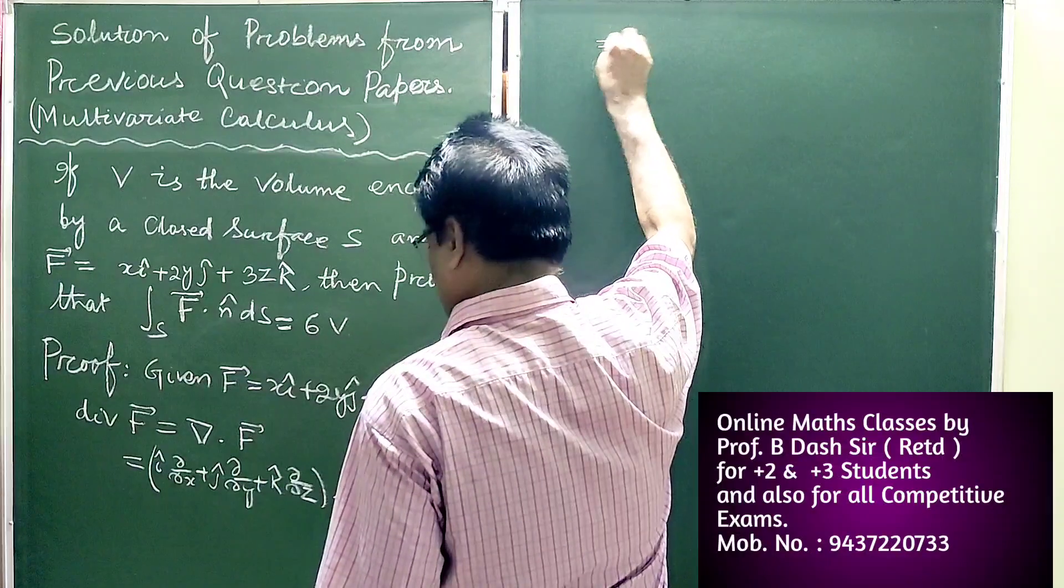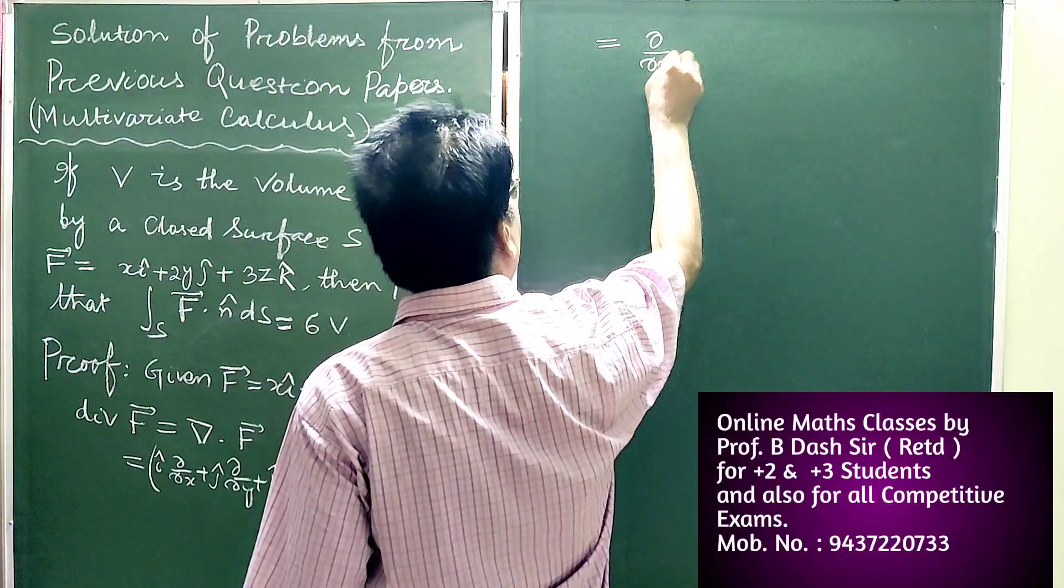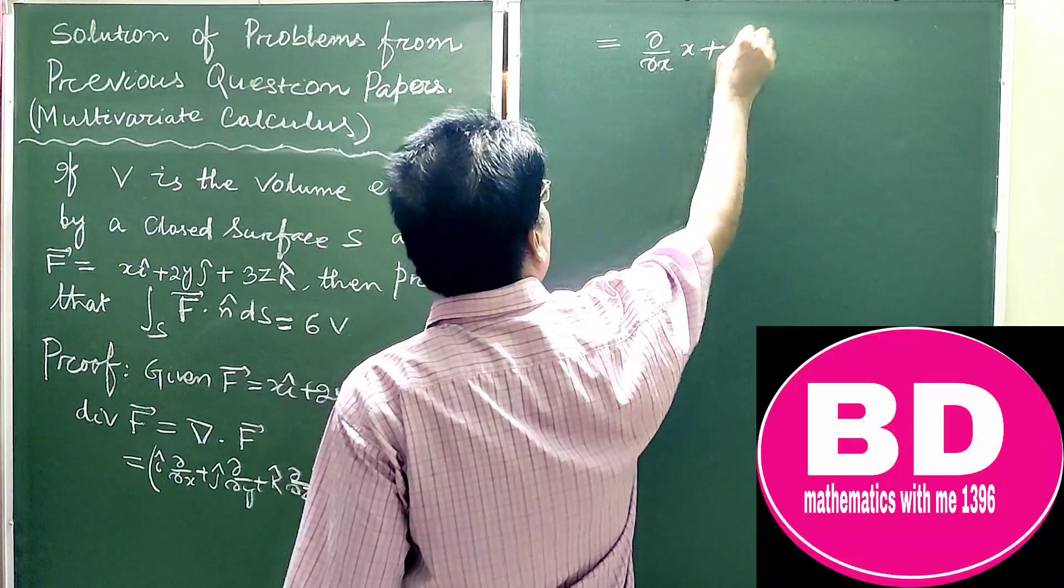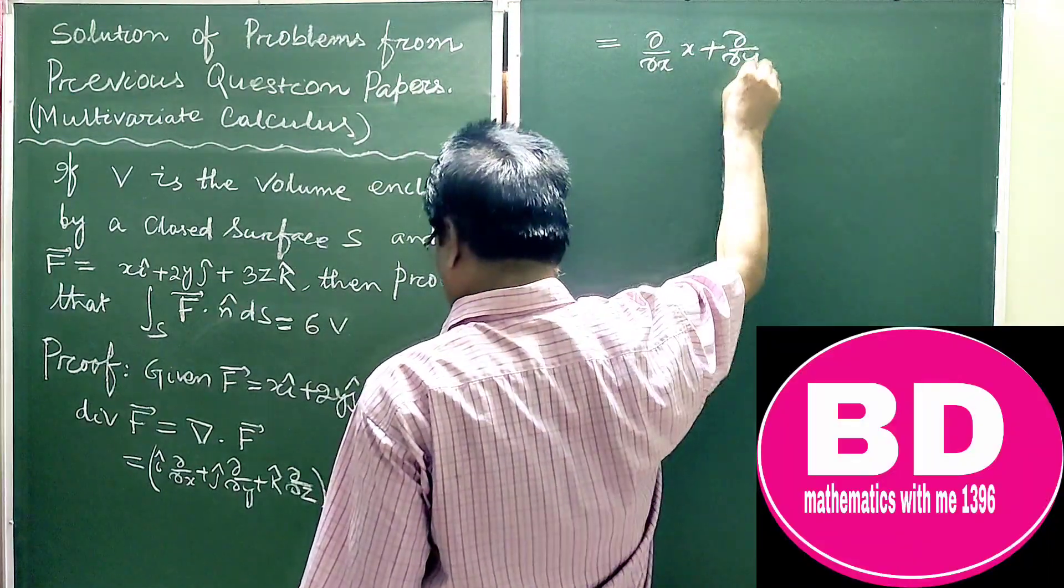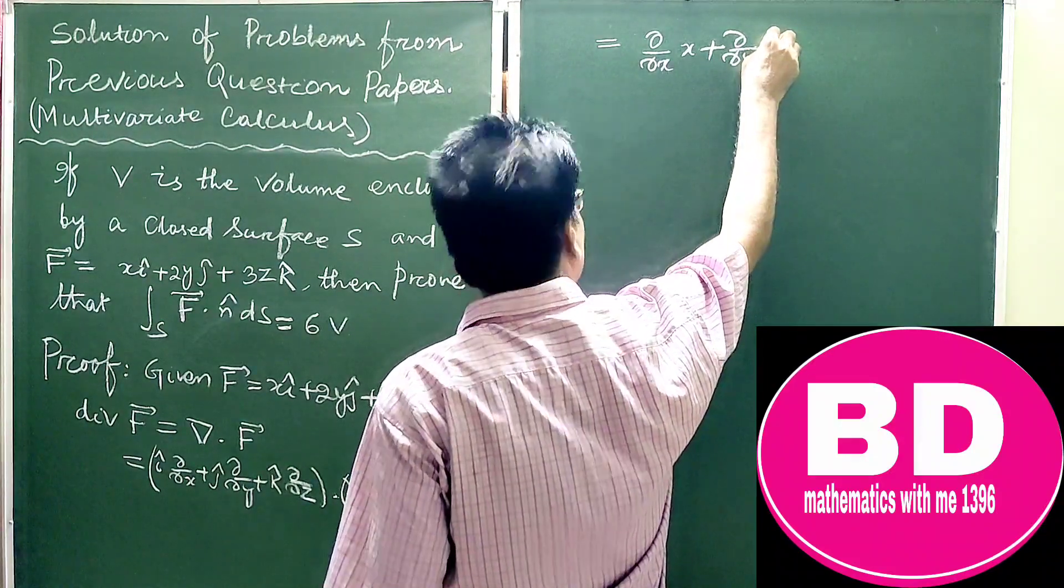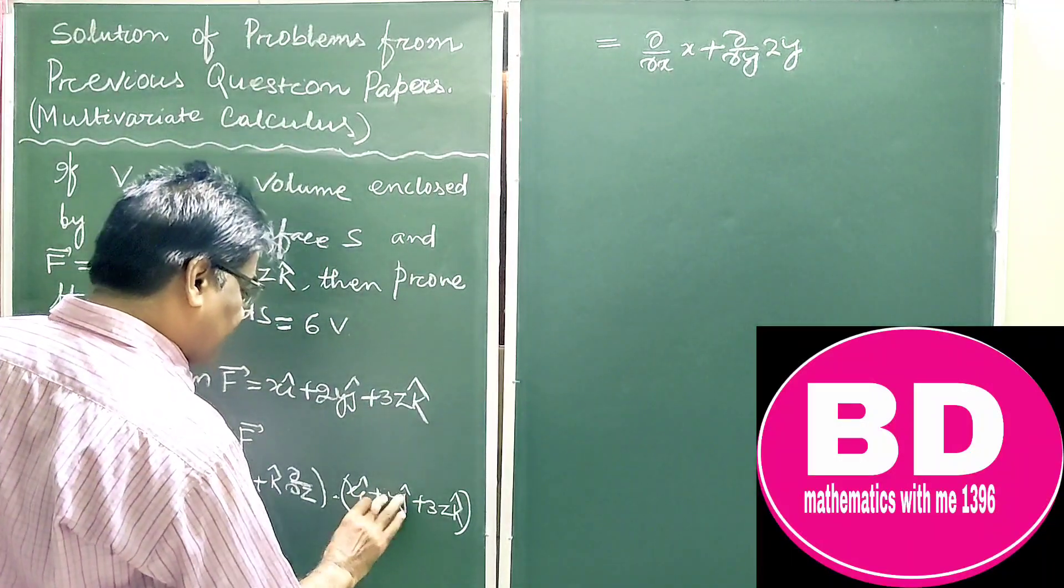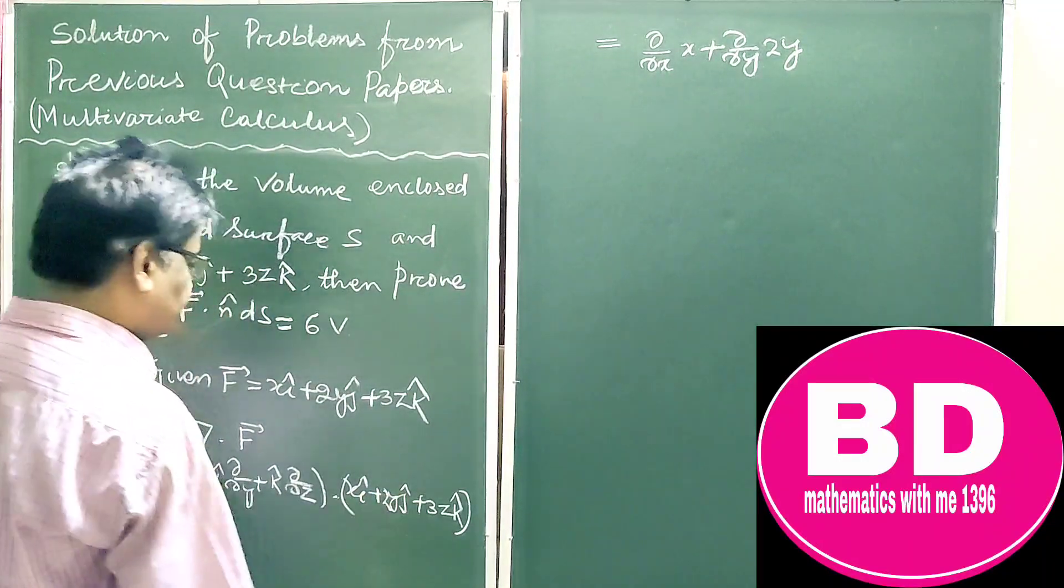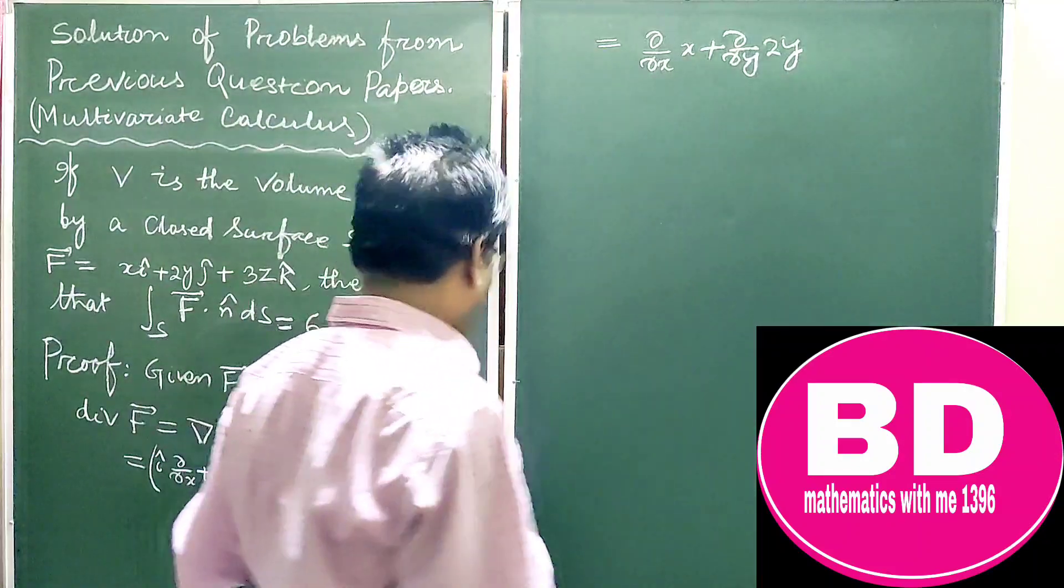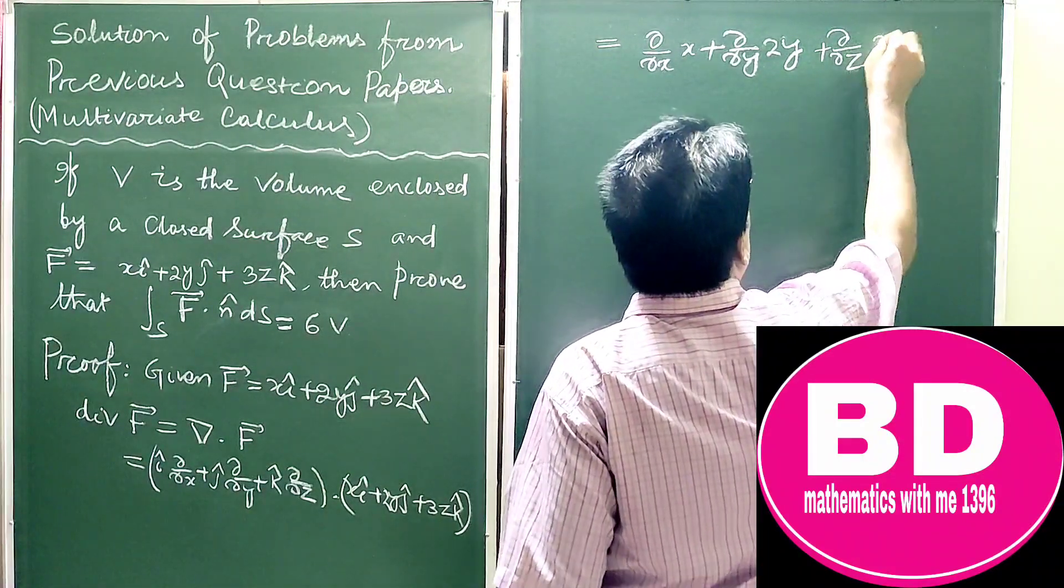This is equal to del by del x of x plus del by del y of 2y (this is 2y) plus del by del z of 3z.